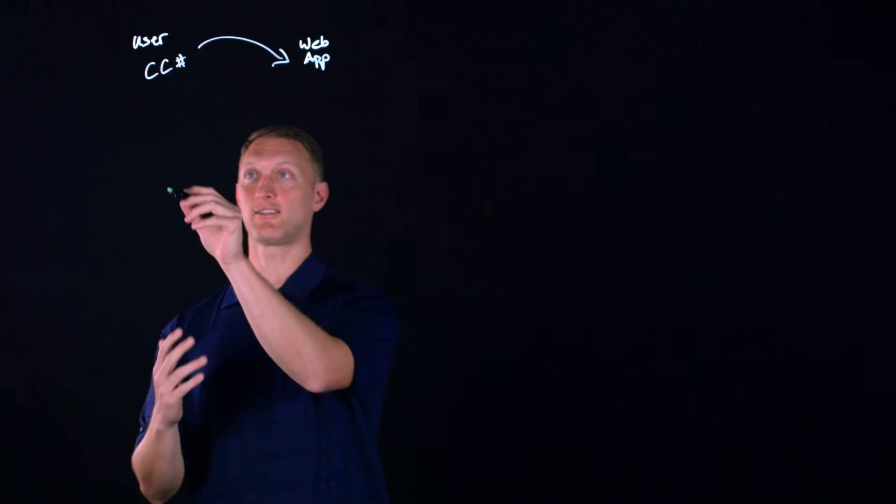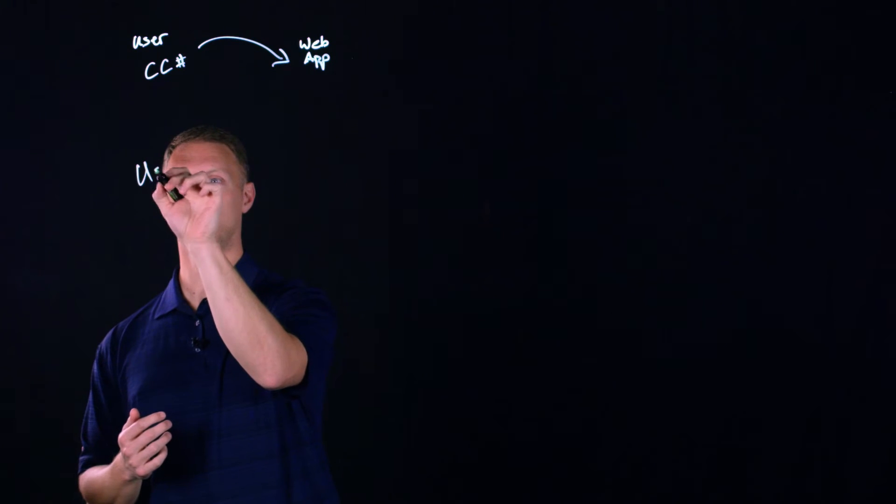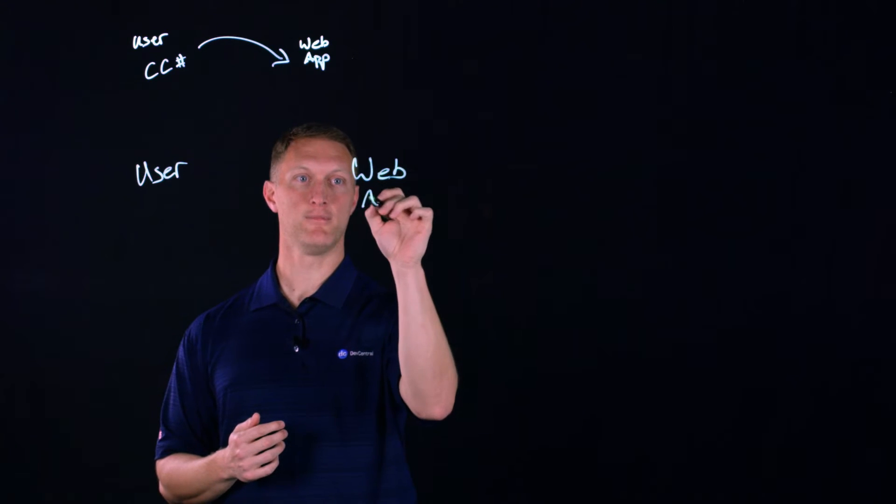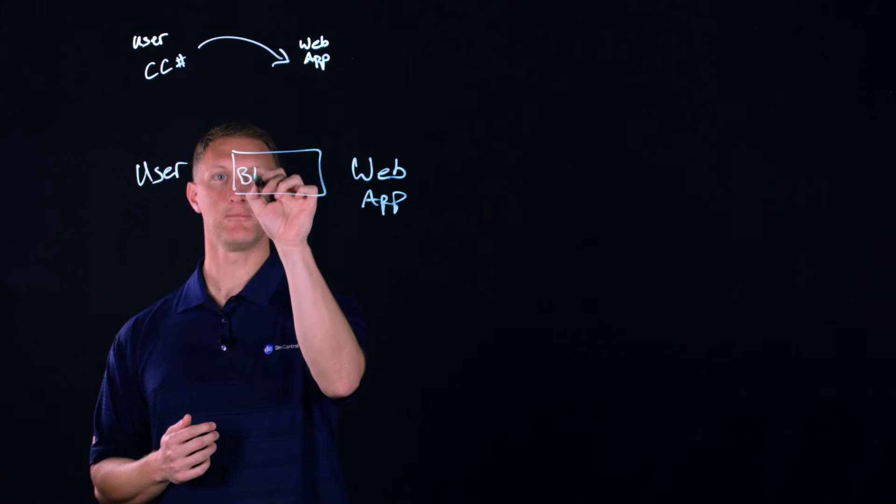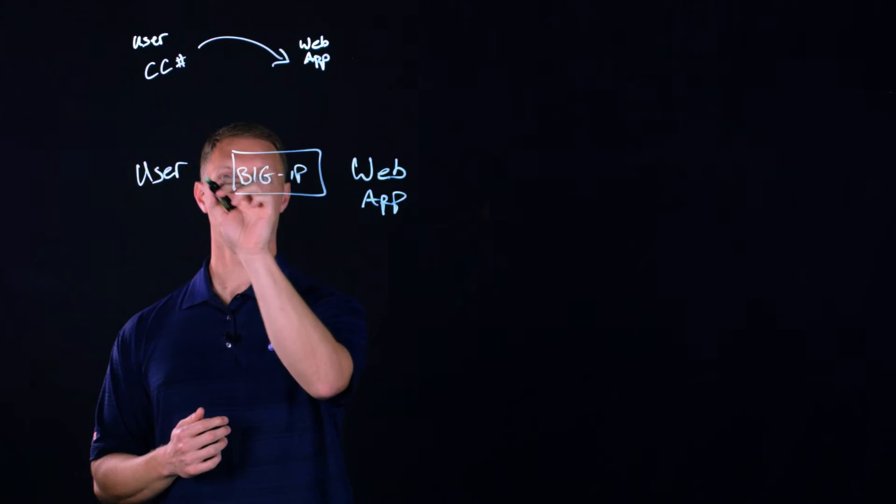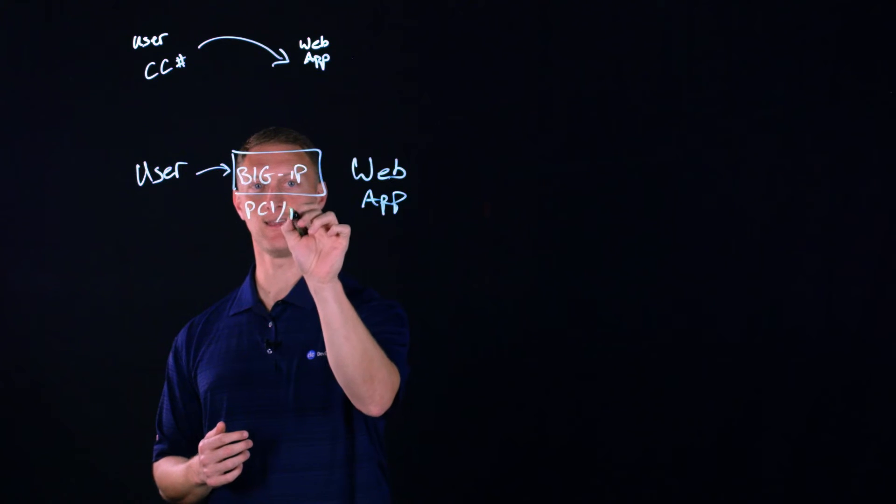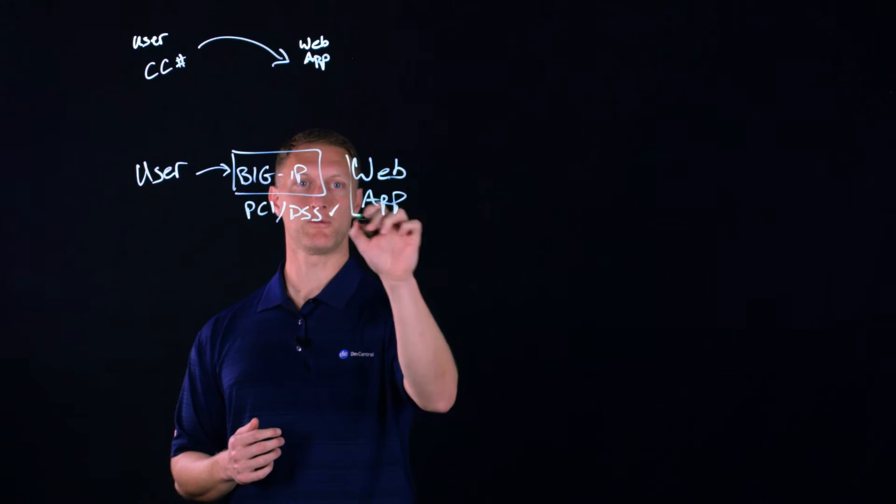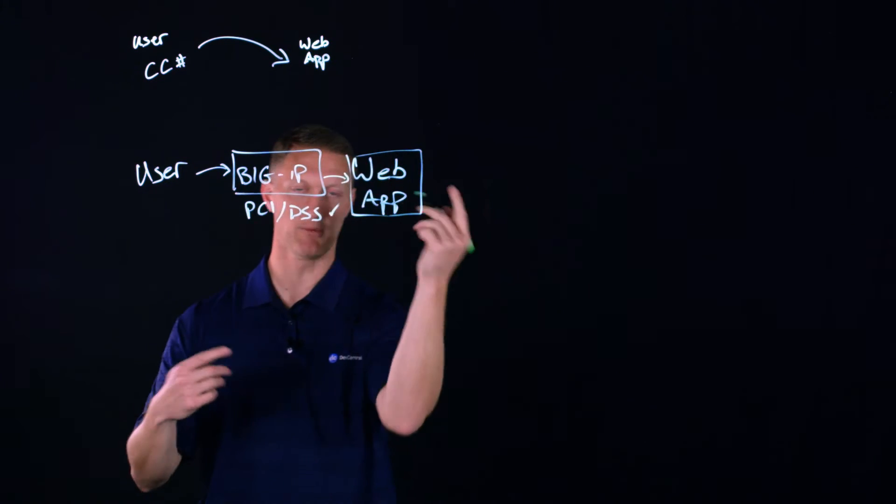And so the heart of what I was going to talk about today is the way that you can put a big IP in the middle of that. And then your back end web servers, you don't have to mess with all the PCI DSS compliance on those. So take this same use case of a credit card transaction. So, you know, user is still here. You've got your web app over here. Well, let's put a big IP in the middle. So here's your big IP. And so the user is going to come into the big IP. And then this thing right here is PCI DSS compliant check. And then these guys don't have to worry about all that stuff. And then of course, once you go through the big IP, it's going to come back to your web applications.